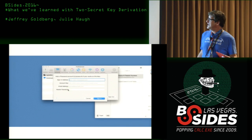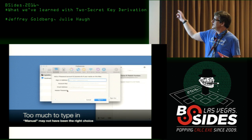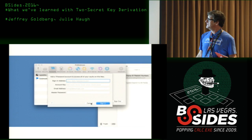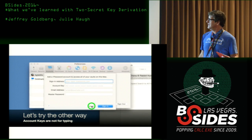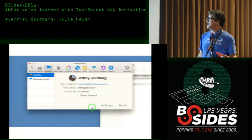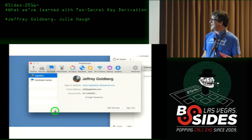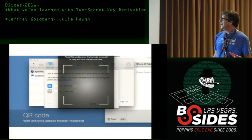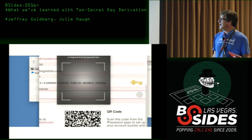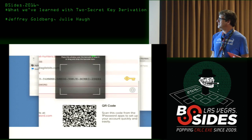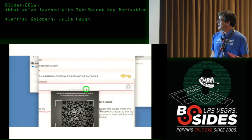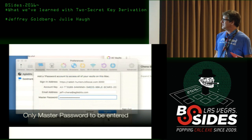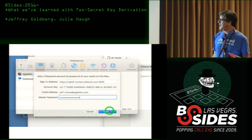She can enter it manually — the account key, the email address, the URL, and the master password — which is not anything any human or canine should ever have to type. So instead we've got scanning a QR code. Here's a handy copy from her emergency kit. And boom, everything is there except the master password, which she types in.